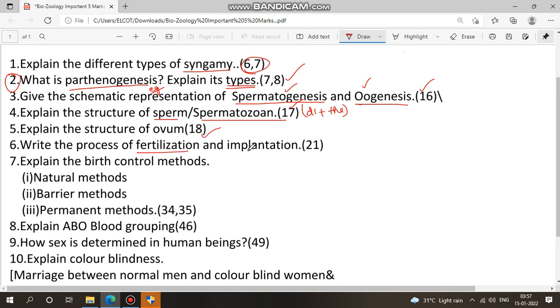Sixth question: write the process of fertilization and implantation, page 21. This is point-to-point.